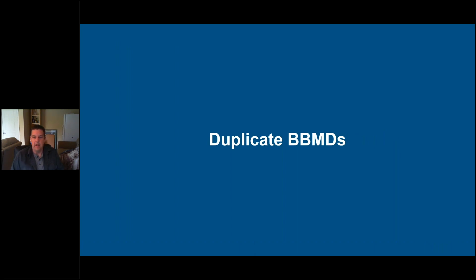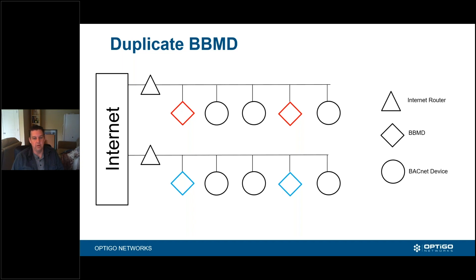The next topic is duplicate BBMD. With a duplicate BBMD, your entire backend system will still run, but what happens is you're going to have more than one BBMD on a given network — the diamond boxes in the diagram indicate a BBMD. Normally, you use a BBMD to cross different switches so you can relay information like a who-is and an I-am response between two different networks across a switch — you're basically relaying broadcast information. A duplicate BBMD means you have a second BBMD on that network, which doubles the amount of traffic.